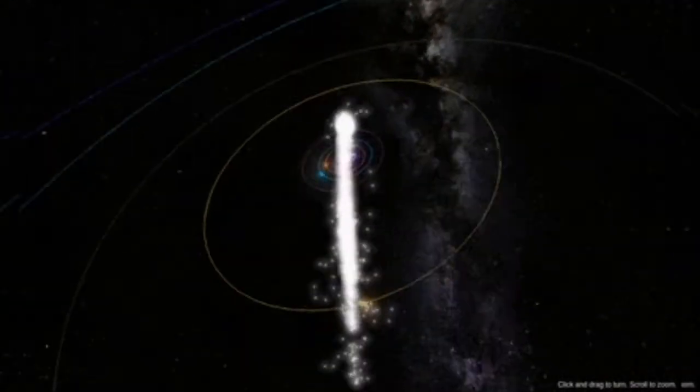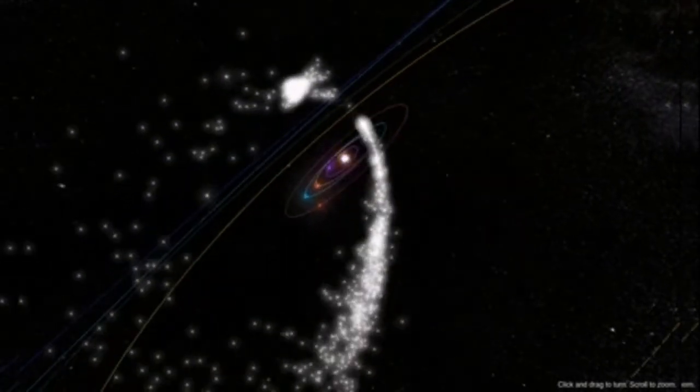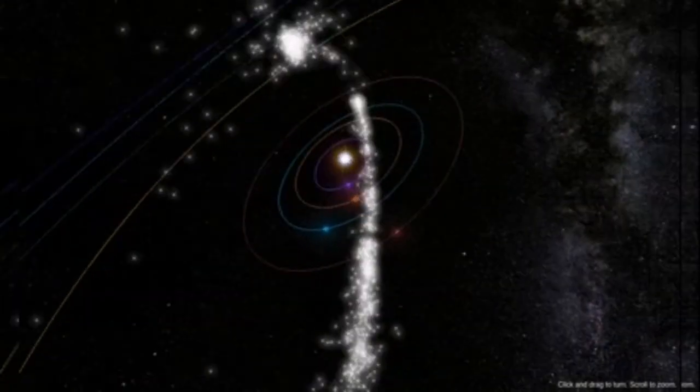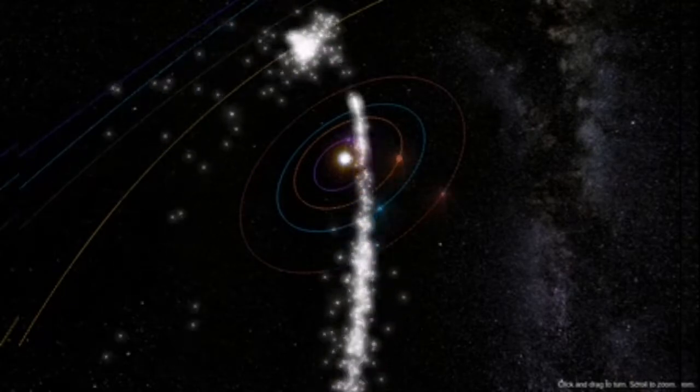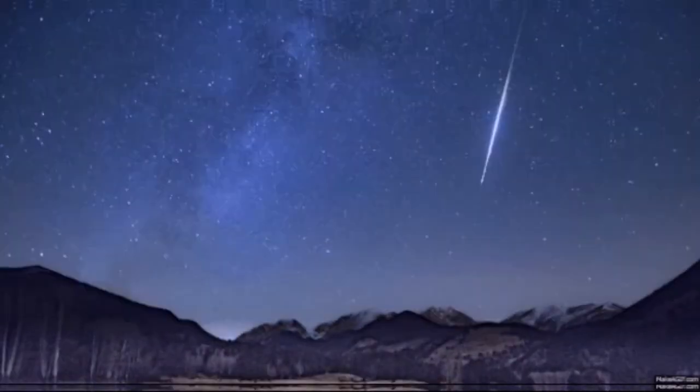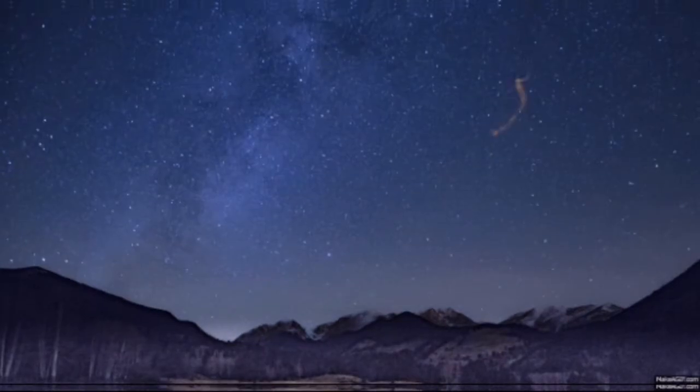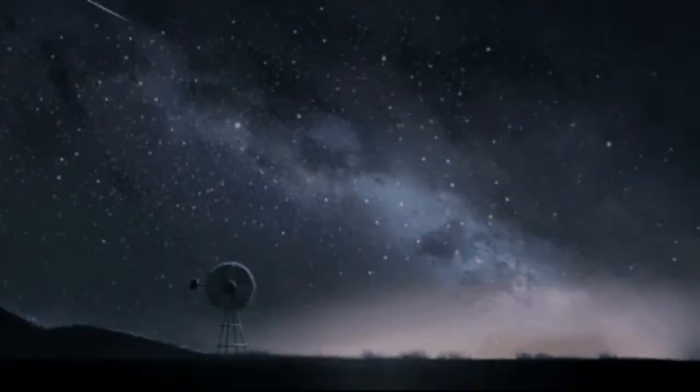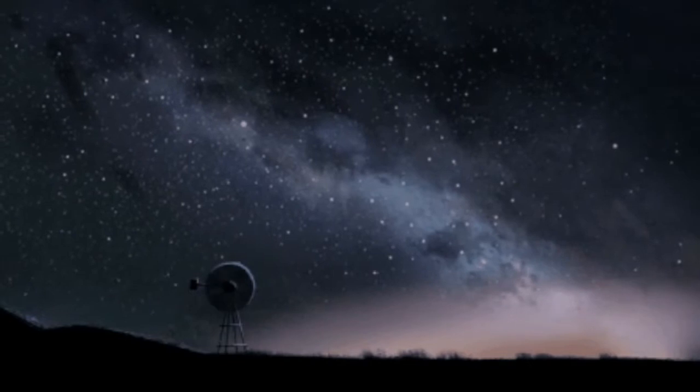Even long after the comet has passed, these debris will be moving in its orbit. They form what we call a meteoroid stream or meteor stream. When the Earth encounters these meteoroid streams, they form meteors in our night sky. We can see them appearing as if they are coming from one direction.